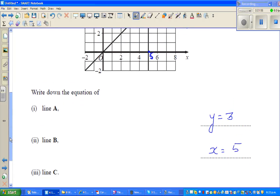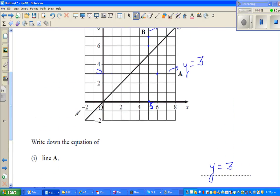Now the last line is line C. So here, if you look at any point on this line, this is (1, 1), this point is (2, 2), this point is (3, 3), and so on. So in other words, your x coordinate and your y coordinates are the same.